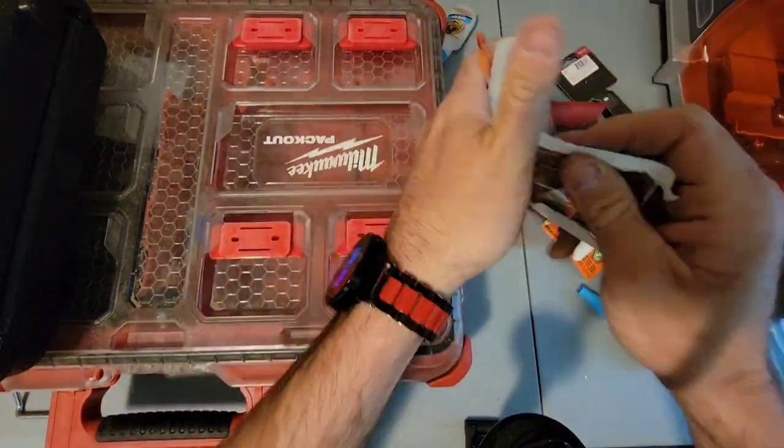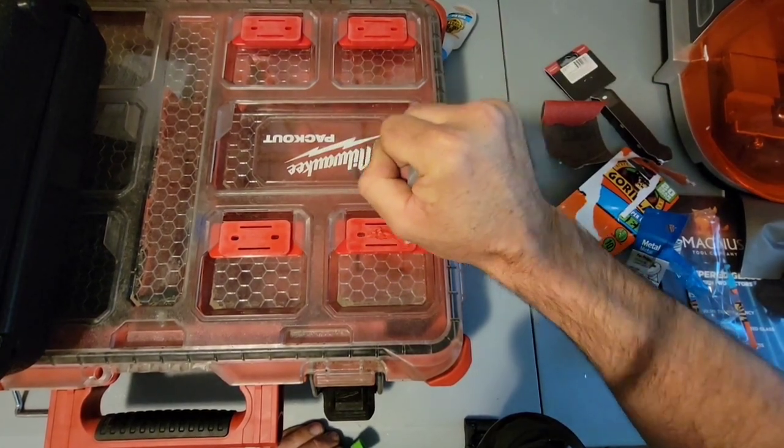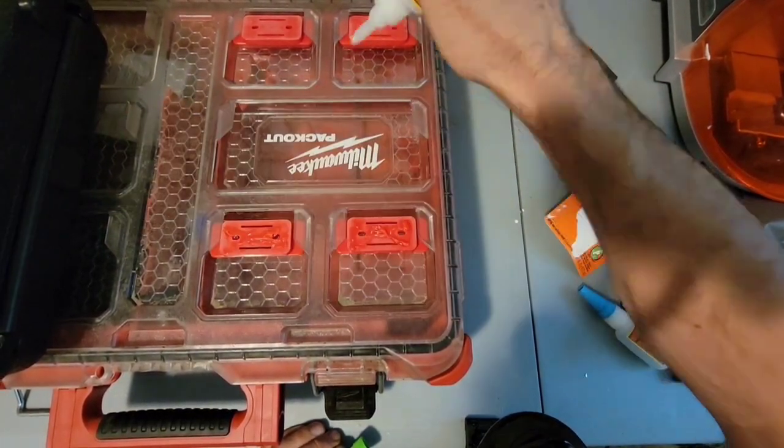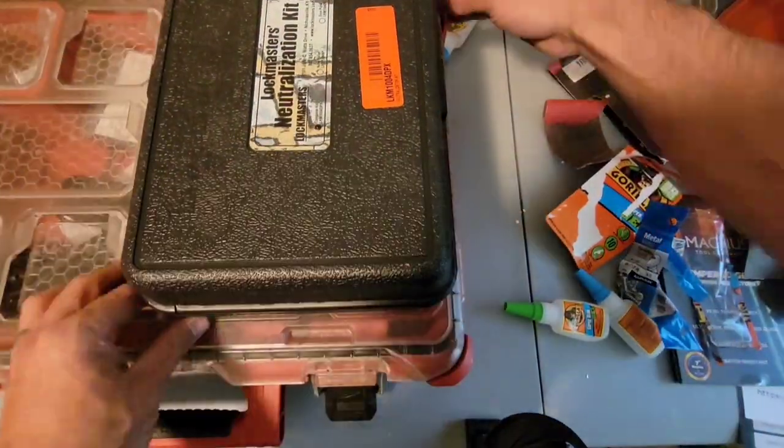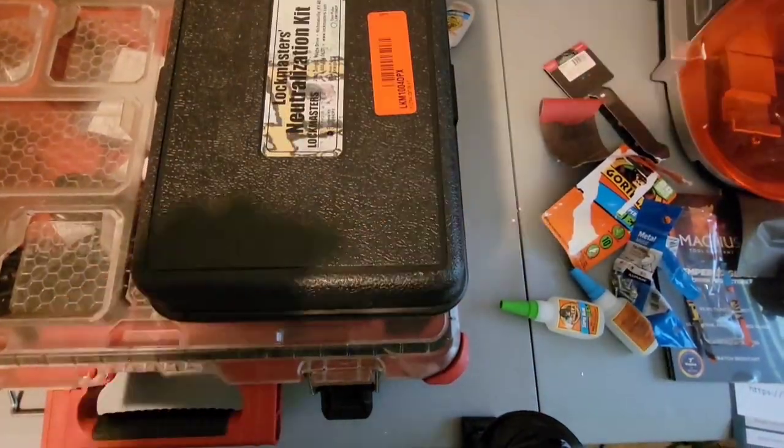Then I use some Gorilla Glue gel. It is the thicker gel because of the textured finish on the box that we're going to be gluing into place, and this glue is only going to give us the proper positioning.